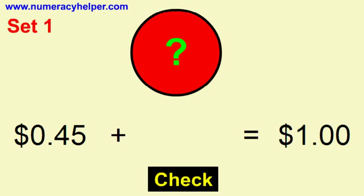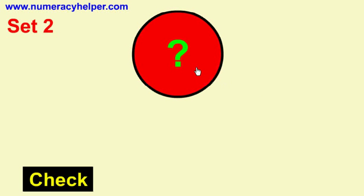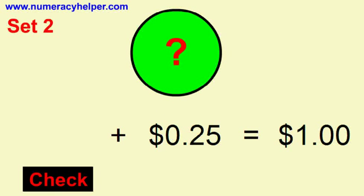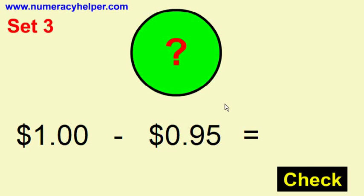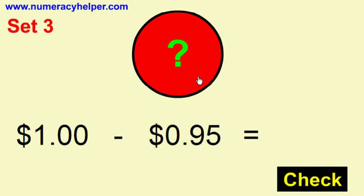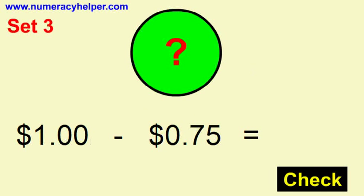We won't take long over this. Set number two simply has questions in a different place, or answers in a different place. Set number three is subtracting from a dollar — and you'll notice that all of these questions are subtracting from a dollar. Each set focuses on one particular skill.